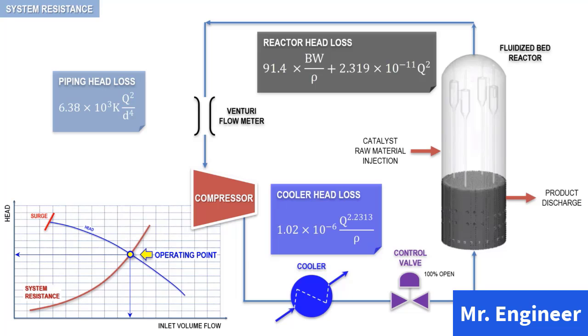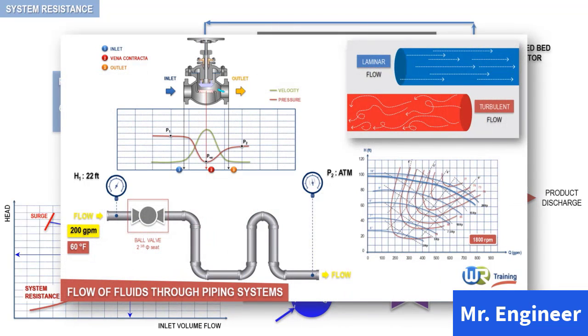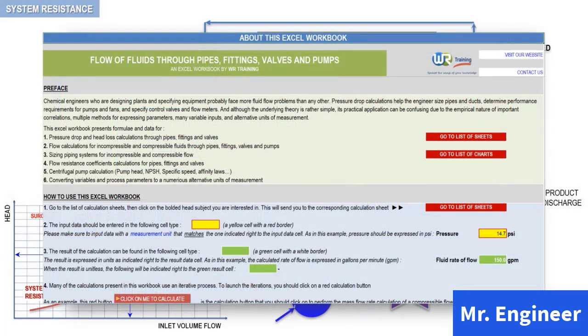The way these correlations were derived is beyond the scope of this course. However, if you want to learn more about how to calculate system resistance and get access to various hydraulic charts and diagrams, then we strongly encourage you to check out our bestseller course, Flow of Fluids Through Piping Systems, Fittings and Valves. We also encourage you to have a look at our Flow of Fluids Excel Workbook.